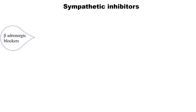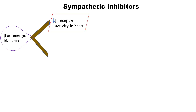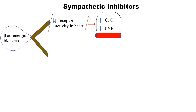Within sympathetic inhibitors, beta adrenergic blockers are agents which bind to beta receptors in the heart and cause a decrease in cardiac output and decrease in peripheral vascular resistance. Cardiac output is the amount of blood pumped by the heart per minute, and peripheral vascular resistance is the resistance of blood vessels on the blood, usually occurring due to vasoconstriction. When cardiac output is increased, the force of blood is increased, therefore peripheral vascular resistance is increased. Here, a decrease in cardiac output and peripheral vascular resistance leads to decreased blood pressure.